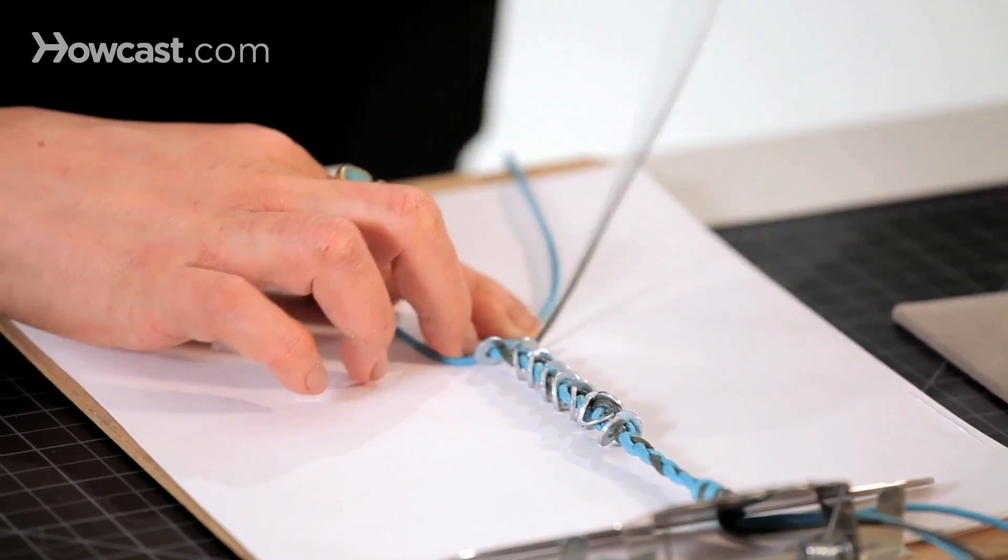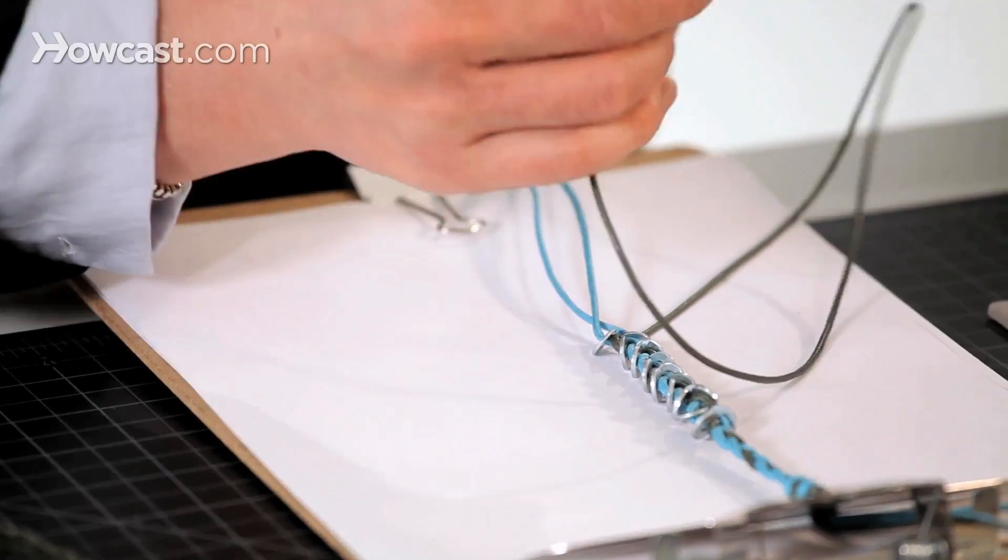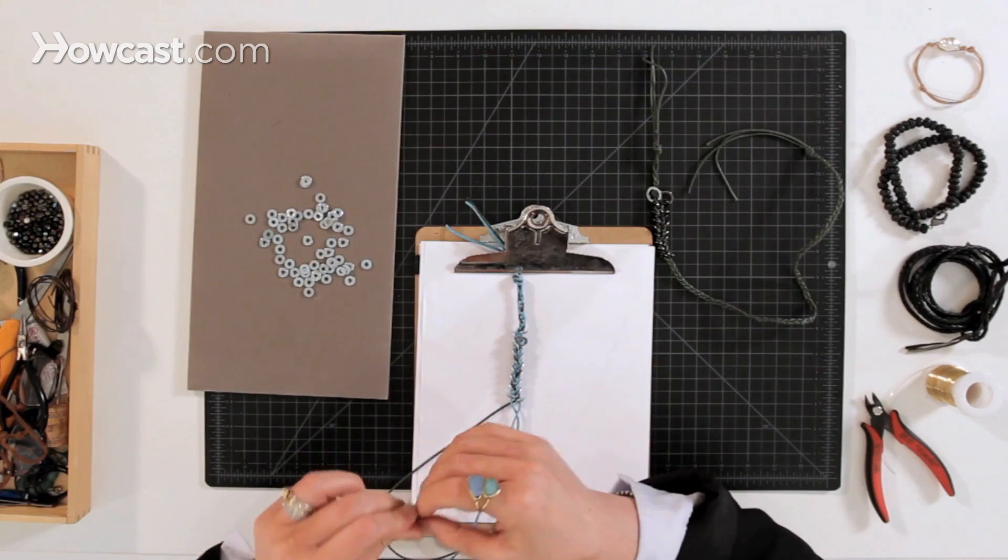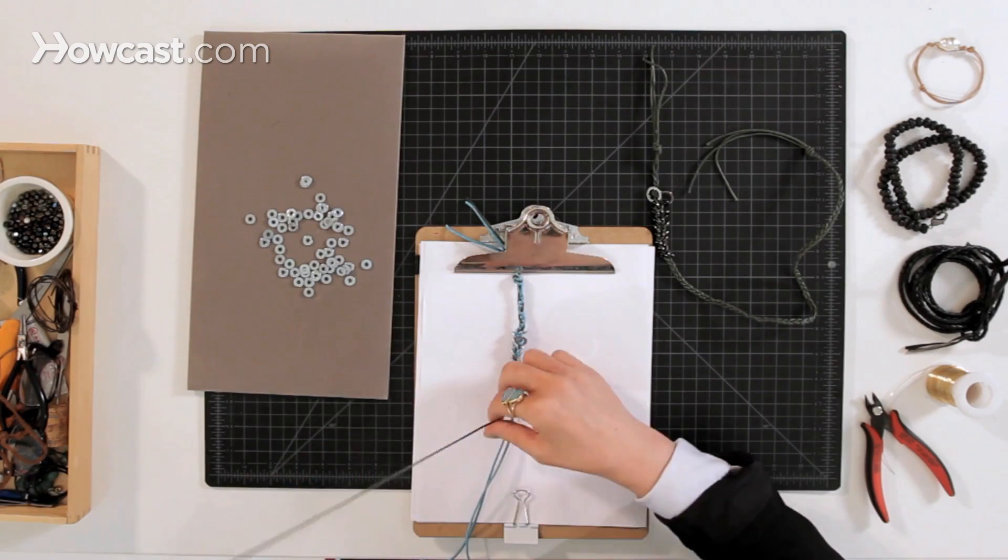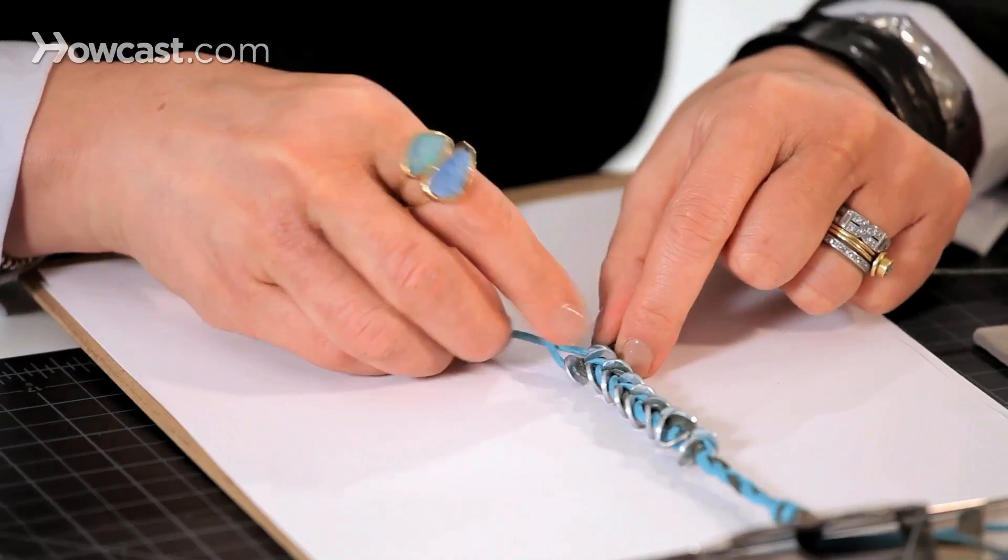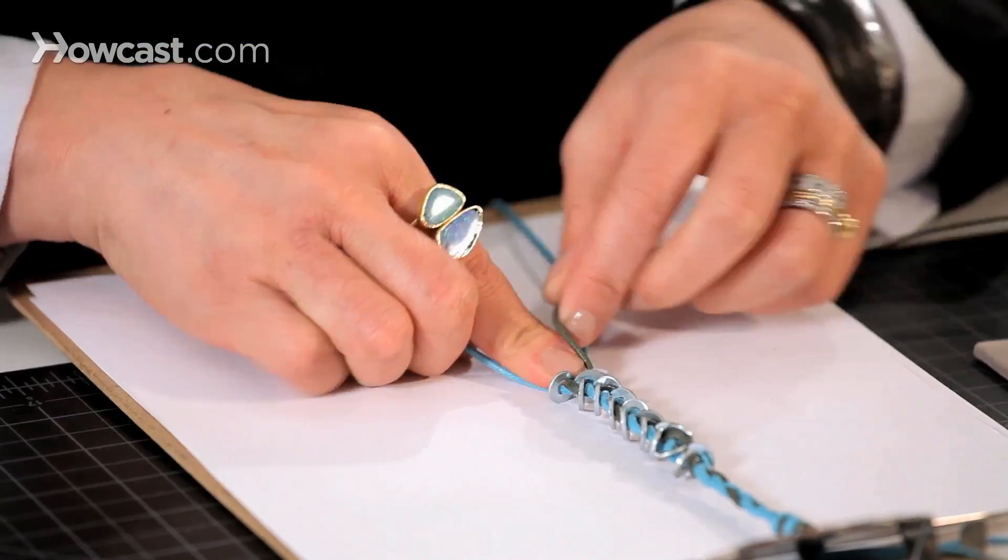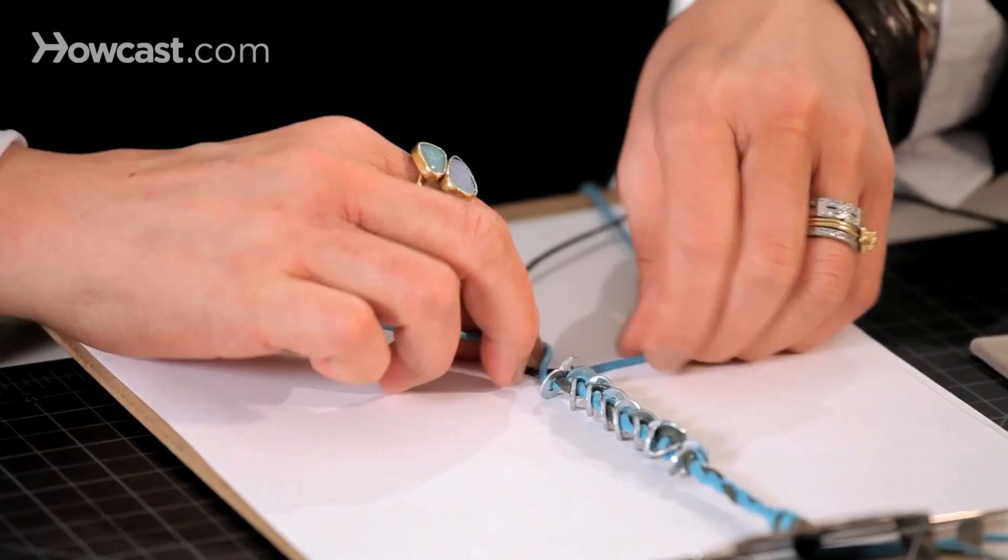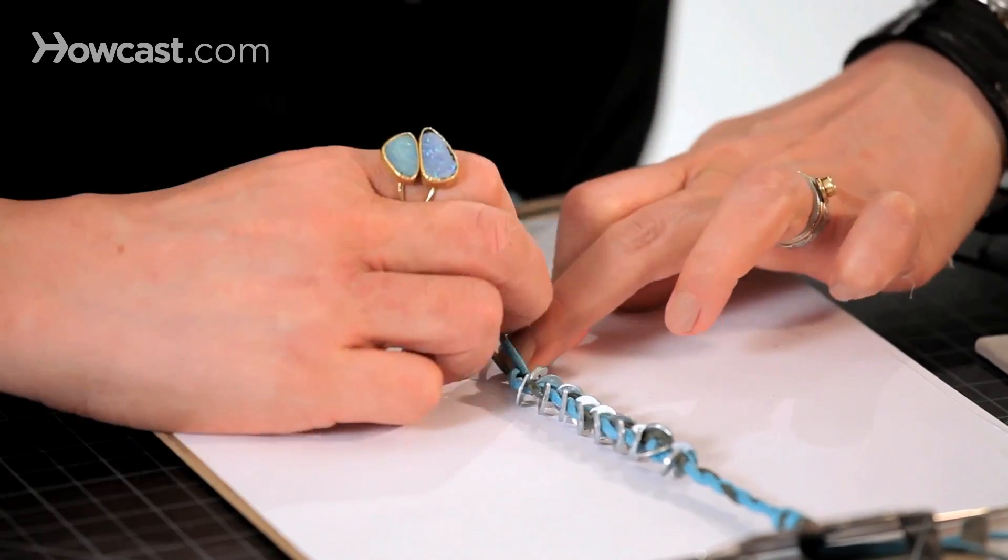Okay, so we're just continuing braiding and I'm going to add just one more. And then I'm going to continue braiding without the washers.